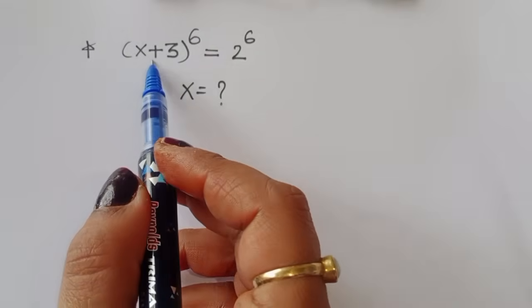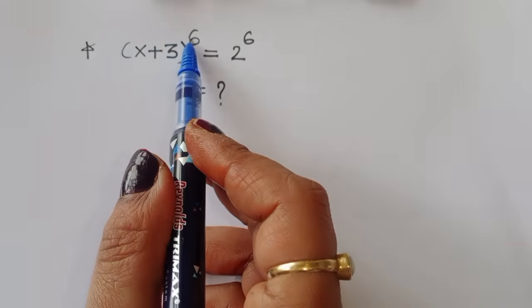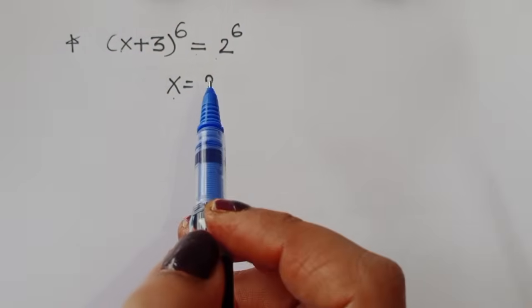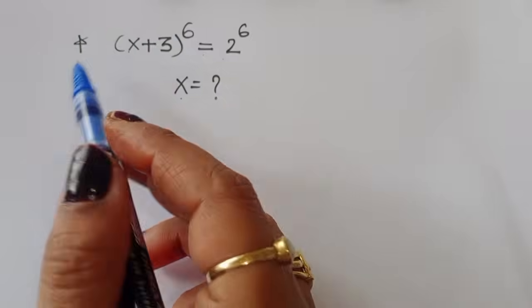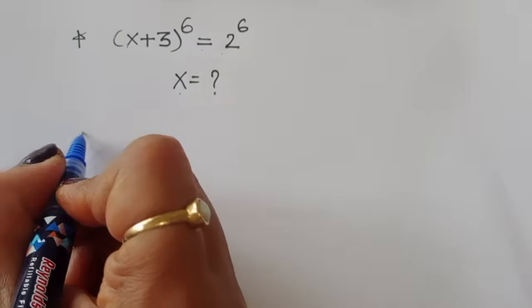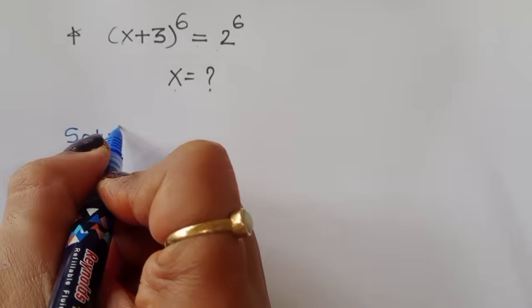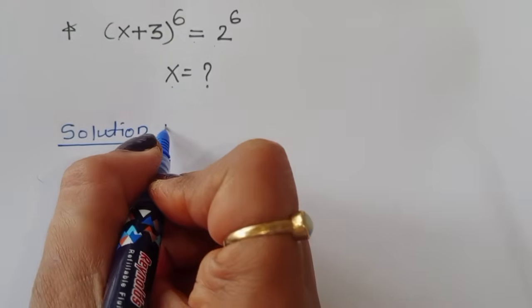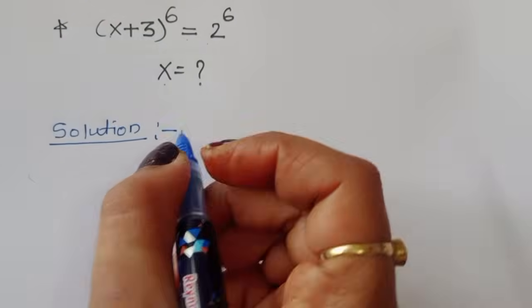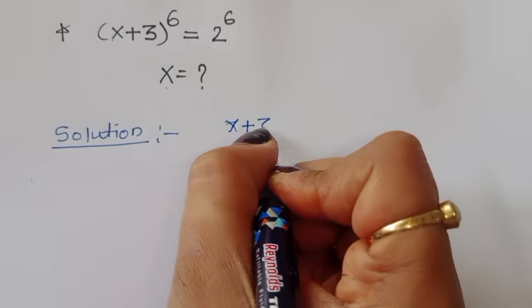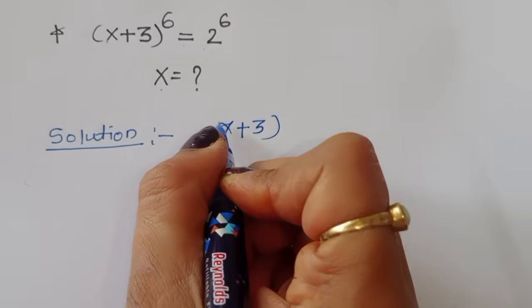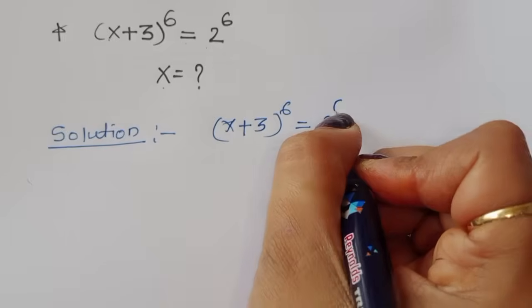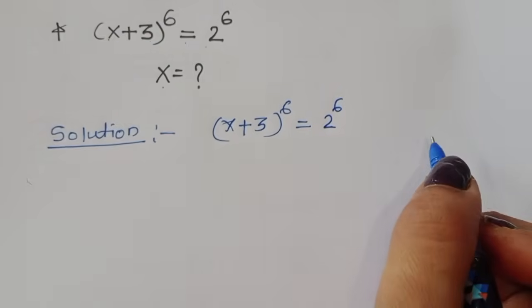The question is: given (x+3)^6 = 2^6, we have to find out the value of x. Let's see the solution.